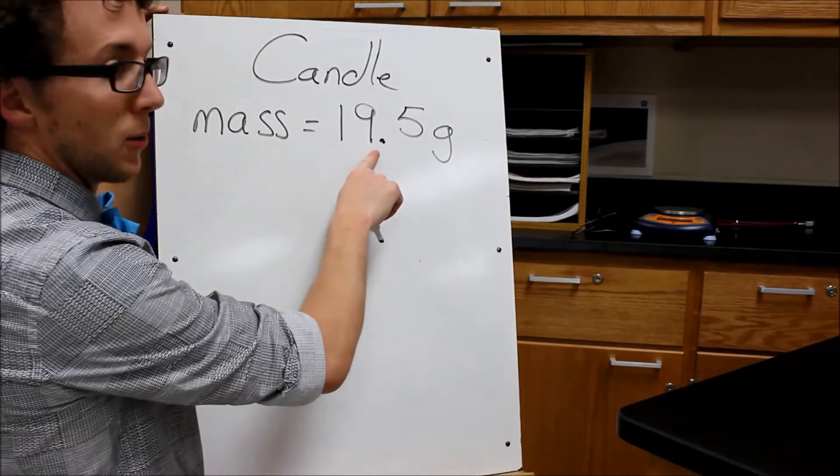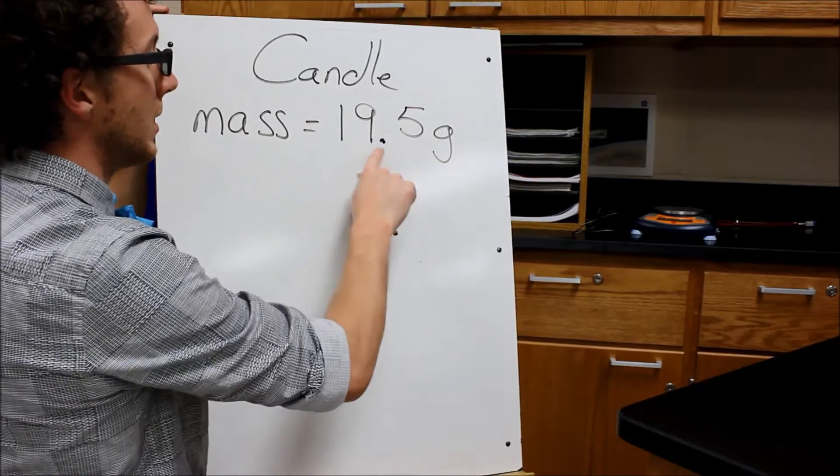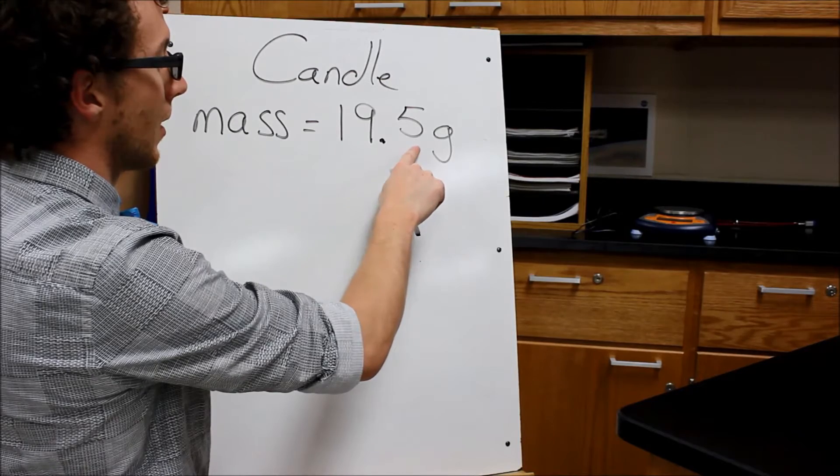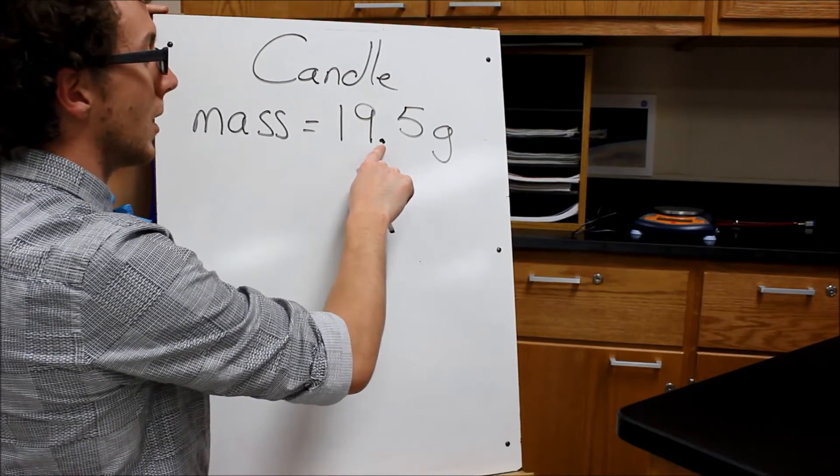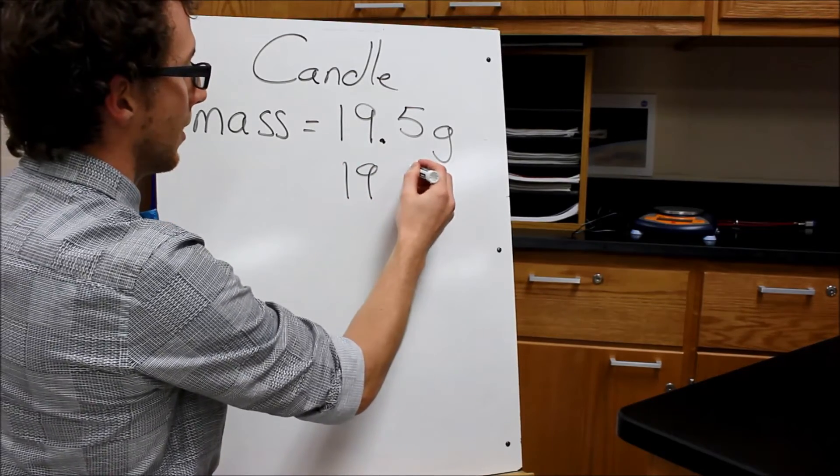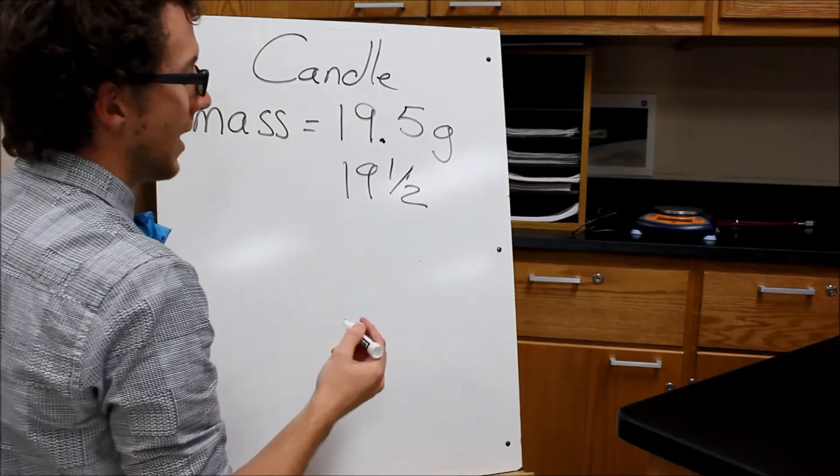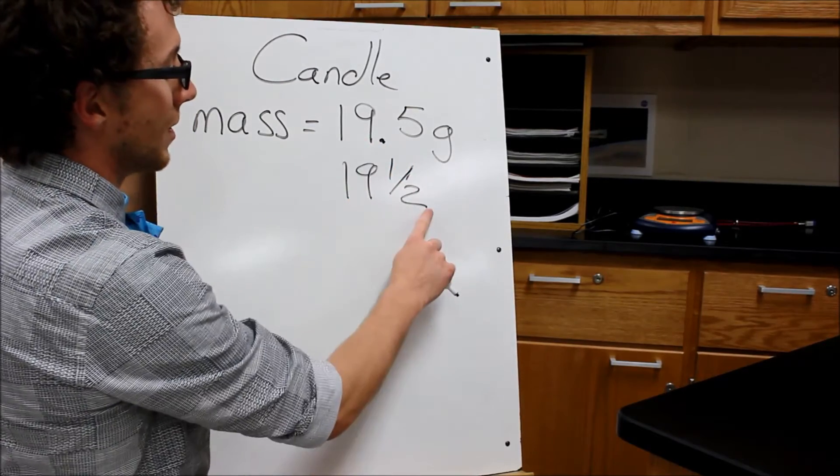So the mass of my candle so far is 19 and a half grams, so 19.5. I want to write it this way because that will allow me to multiply this a little easier versus if I were to write it 19 and one half. It's just less confusing. So try to write it this way versus this way.